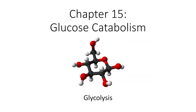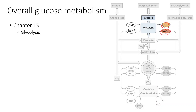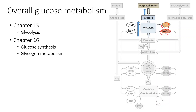Hello and welcome to Chapter 15, where we're going to start talking about glucose metabolism. Today we're specifically going to be discussing glycolysis. Over the next several chapters we'll discuss several different aspects of glucose metabolism, summarized in the diagram on the right. In Chapter 15, we'll discuss glycolysis — the breakdown of glucose into pyruvate — and during this process we'll form some ATP as well as reducing the electron carrier NAD+ into NADH.